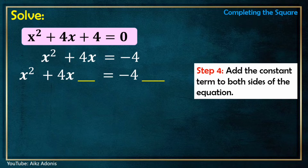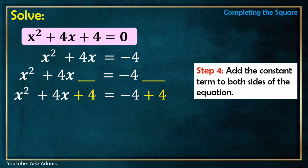Step 4: Add the constant term to both sides of the equation. Since the constant term found using the formula is 4, we will add 4 to both sides of the equation. So we have x² + 4x + 4 = -4 + 4.